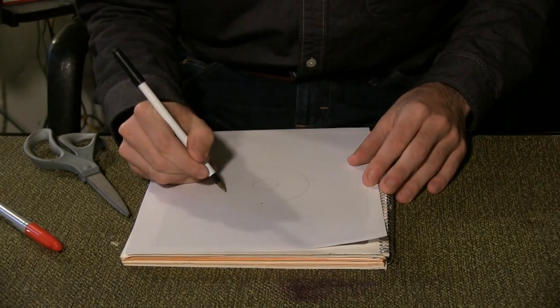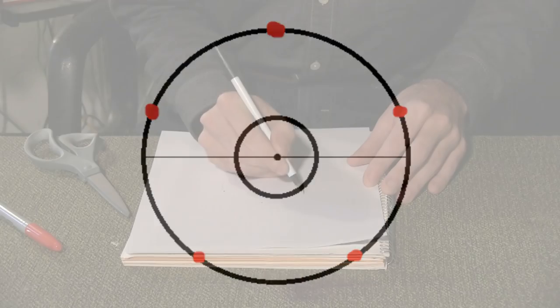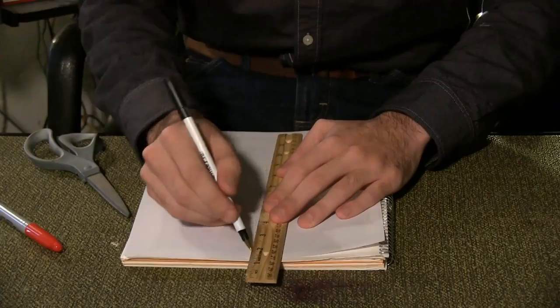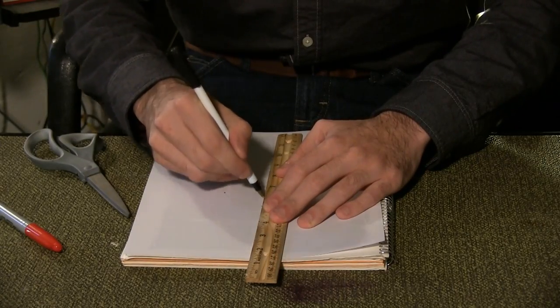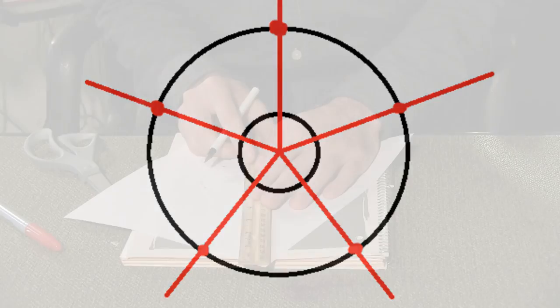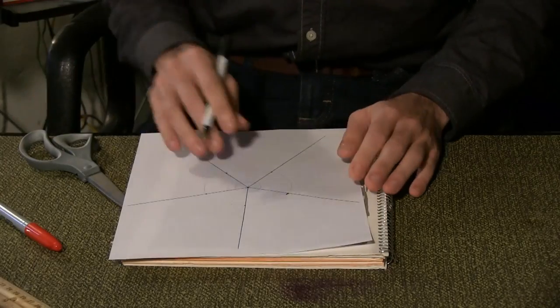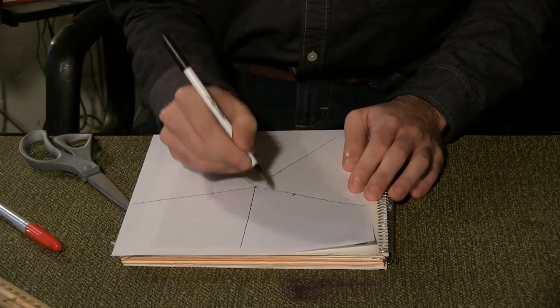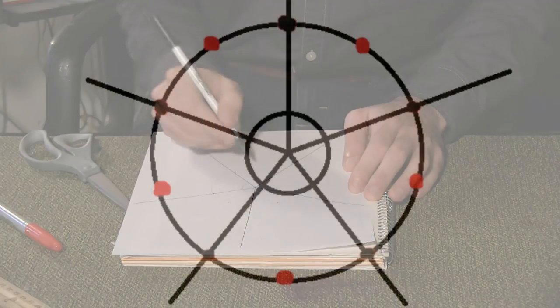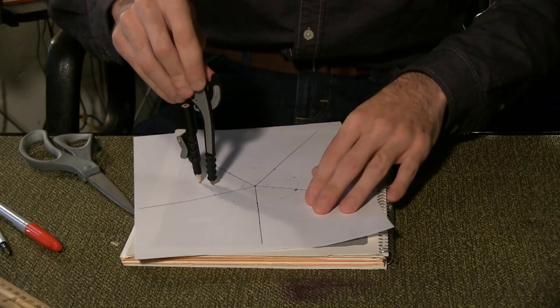Mark off 5 points equidistance from each other. Draw a line connecting each of these points to the center point. In the space between these points, mark the center. Repeat for all 5, then use these center points to draw 5 1 inch circles.